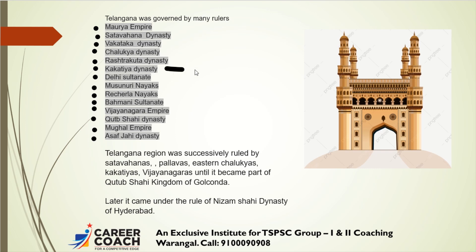Among all these rulers, the Kakatiya dynasty is very important for the Telangana region as well as the southern part of India. The complete art and culture of Telangana can be seen in the Kakatiya dynasty, so it is called the golden ruling period. The Kakatiya dynasty came to an end due to the Khilji and Tughluq invasions in southern India. They defeated the Kakatiya dynasty and established their empire in the south.